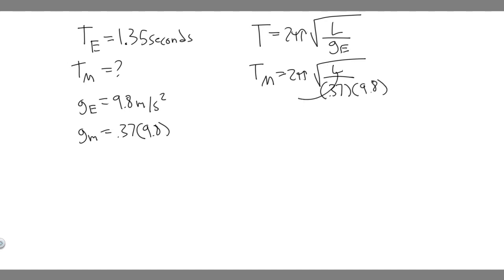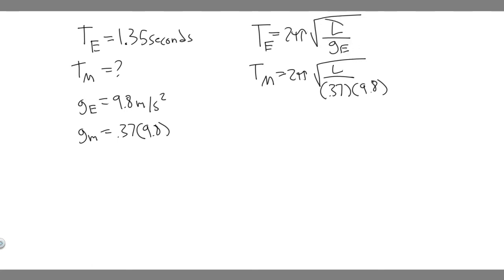How do we find the length? We need the length of our pendulum to solve for this. We're given T_E, the period on Earth, and we know gravity on Earth, so we can solve for L. The length will be the same on both planets. The period on Earth — 1.35 — equals 2π times the square root of L divided by 9.8.